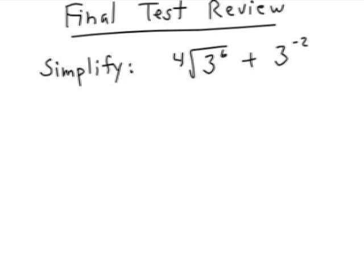Here we have a simplifying problem that involves a large index, the 4th root of 3 to the 6th power, and we have a negative exponent. So we need to simplify this whole expression. Well, how do you do that?